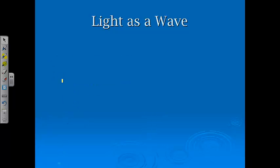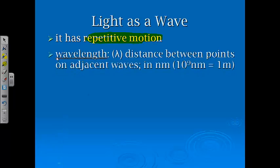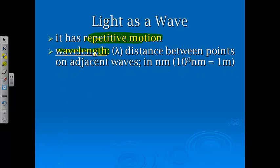Continuing with the wave, waves have repetitive motion. Wavelength, which is abbreviated by this lowercase Greek letter lambda, is defined as the distance between points on adjacent waves. A lot of times we give wavelengths in nanometers, which, remembering our metric prefixes, there's 10 to the 9th nanometers in one meter.